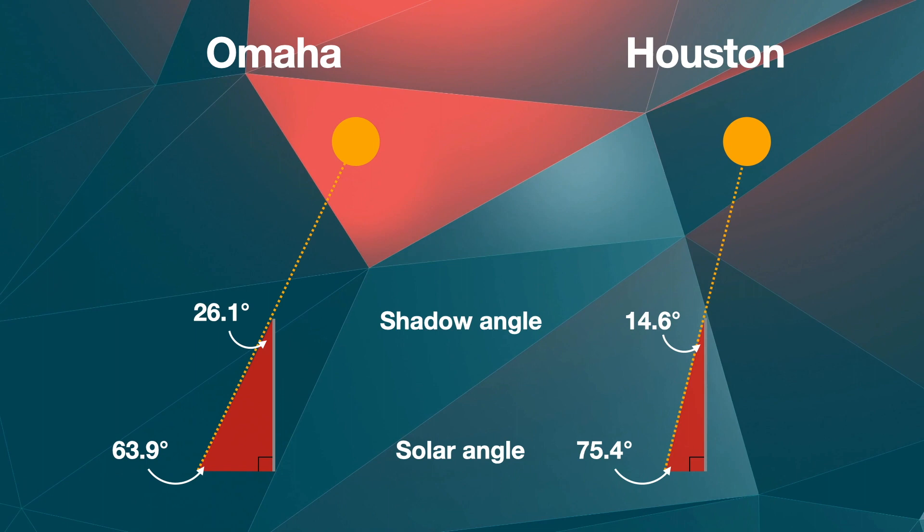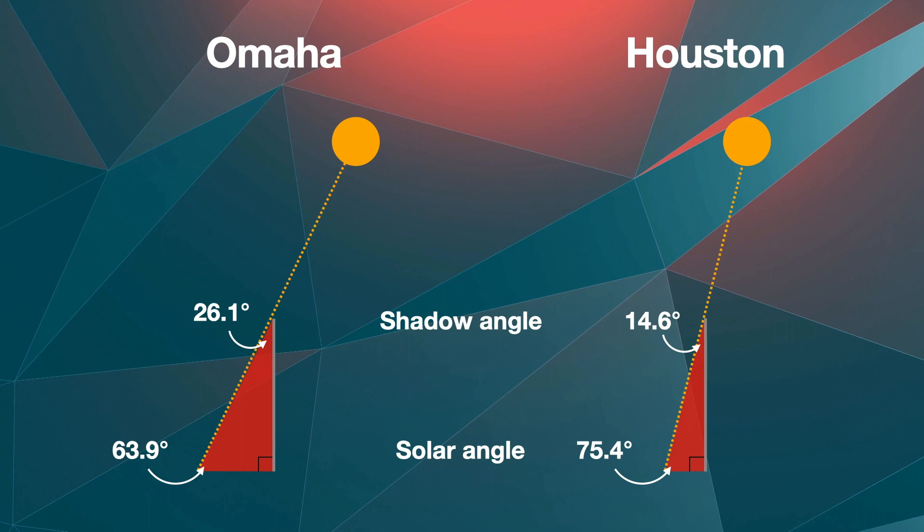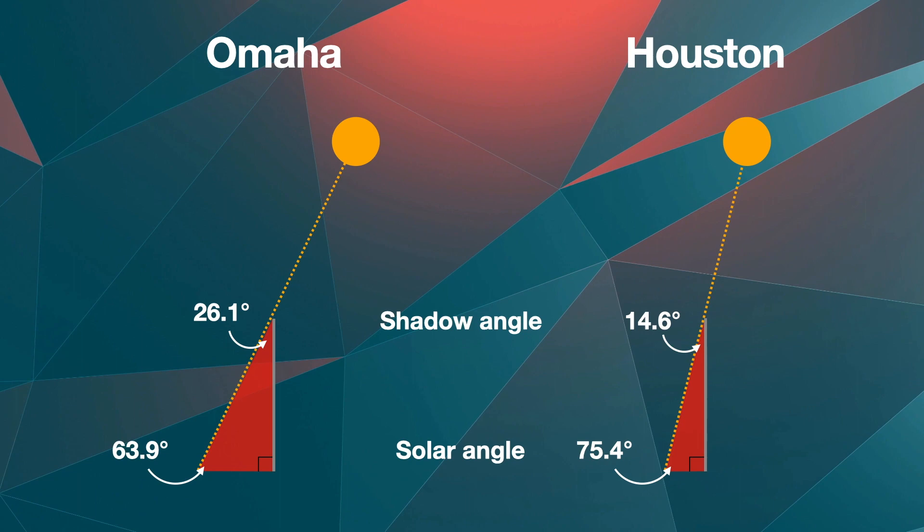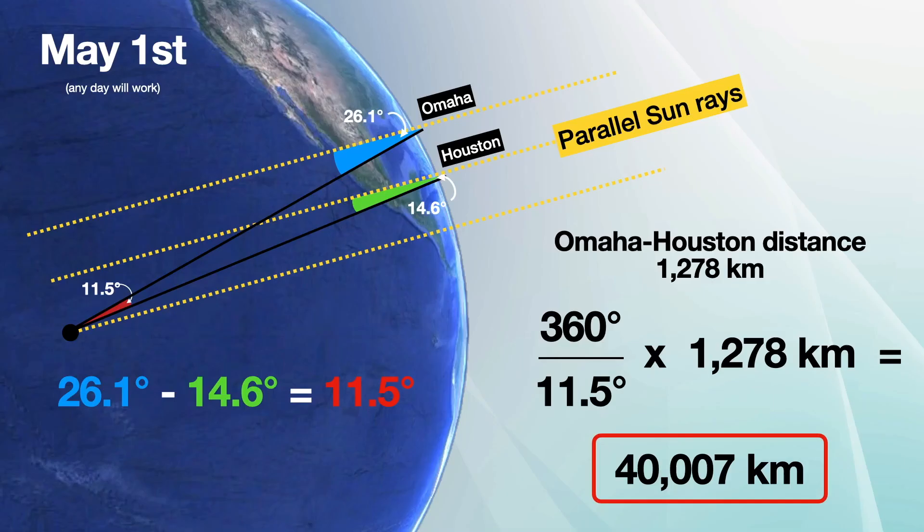By subtracting each from 90 degrees, the shadow angles for Omaha and Houston are 26.1 and 14.6 degrees respectively. The difference between each angle is 11.5 degrees, therefore Omaha and Houston are separated by 11.5 degrees of latitude.